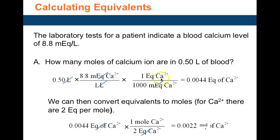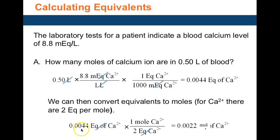By definition, 1 eq of calcium equals 1000 meq, so the meq units cancel. Dividing 4.4 by 1000 gives 0.0044 eq of calcium ions in half a liter of blood. The next step converts eq into moles using the equality: 1 mole of calcium equals 2 eq, because the charge on the calcium ion is 2+. Dividing 0.0044 by 2 gives 0.0022 moles of calcium ion.